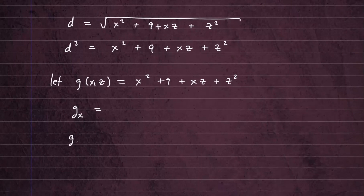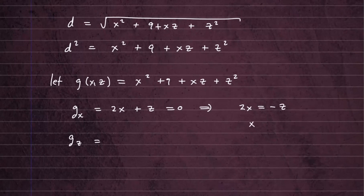Let's compute the partial derivatives. The partial of G with respect to X equals 2X plus Z. We set that equal to 0 to find critical numbers, giving us 2X equals negative Z, so X equals negative Z over 2.